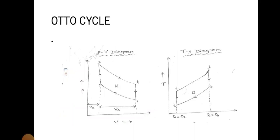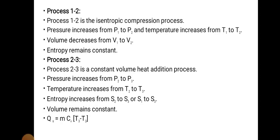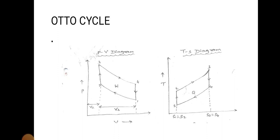Process 3 to 4 is an isentropic expansion process. Pressure decreases from P3 to P4 and volume increases from V3 to V4. On the TS diagram, entropy remains constant: S3 equals S4.